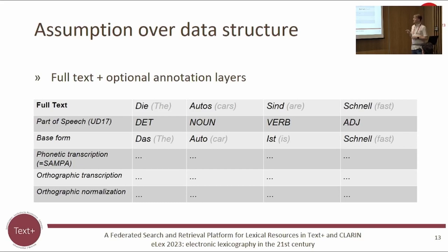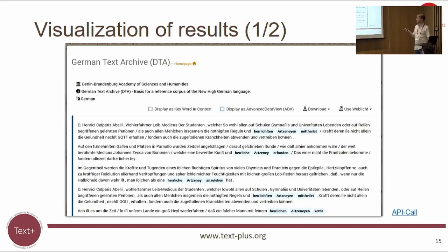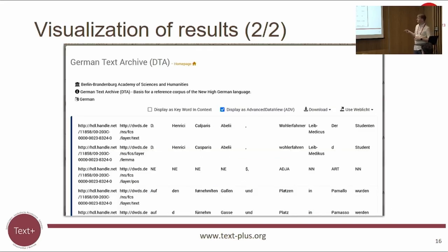FCS assumes a data structure with a full-text layer and optional annotation layers on top, specifying five layer types which can also be extended with custom tag sets. Similar to CQP or the Sketch Engine, you can build queries with a visual query builder and search across multiple annotation layers. Results are displayed as keyword-in-context, showing sentences with highlighted hits, a collocation view with a central hits column, or a structured display with different annotation layers.